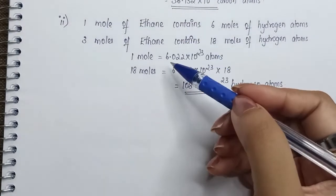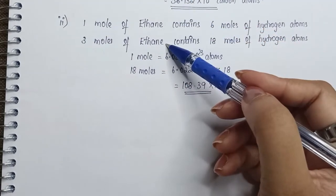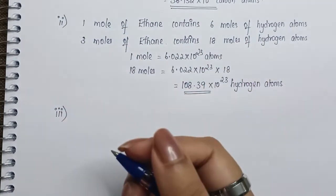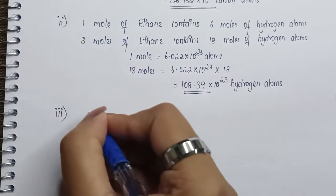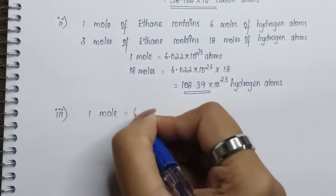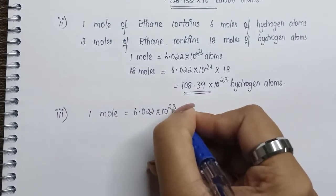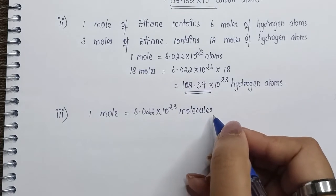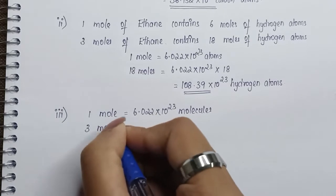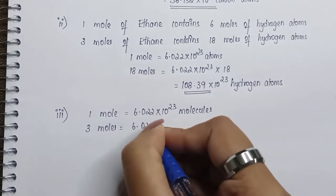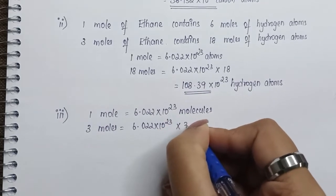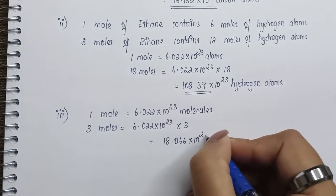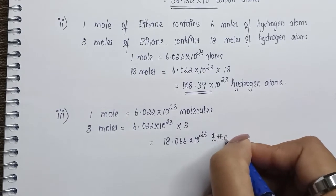Subdivisions one and two follow the same solving pattern. Now for the third question, we calculate the number of molecules of ethane. We check the relation between mole and molecule: one mole is equal to 6.022 × 10²³ molecules. Therefore, three moles is equal to 6.022 × 10²³ into 3, which gives 18.066 × 10²³ ethane molecules.